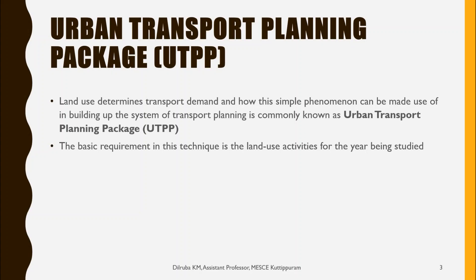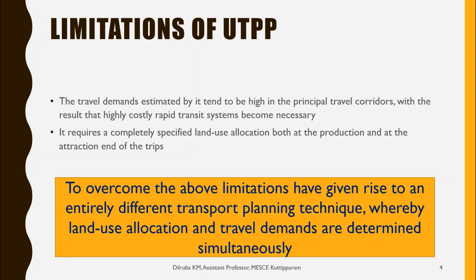Before moving to the Lowry derivative model, we should know what UTPP is — the Urban Transport Planning Package. From all transportation planning studies, it was estimated that land use determines the transport demand, and this simple phenomenon is used to build up a system of transport planning, commonly known as UTPP. The basic requirement of this technique is land use activities for the year being studied, which then generate the travel demand for forecasted years. The main limitation is that travel demand estimated by this study tends to be very high in principal travel corridors, requiring highly costly rapid transit systems.